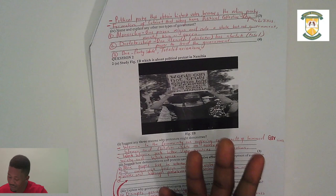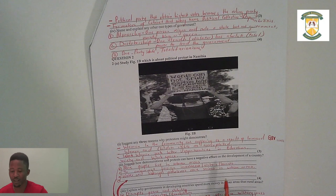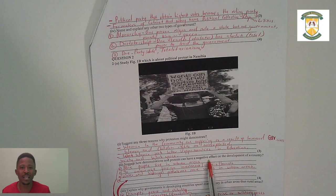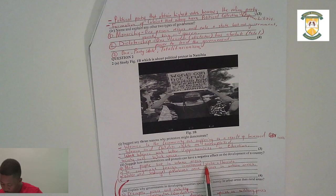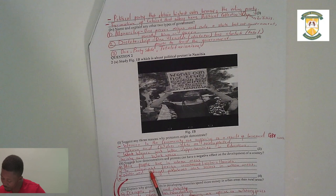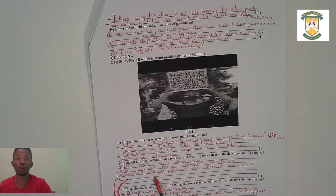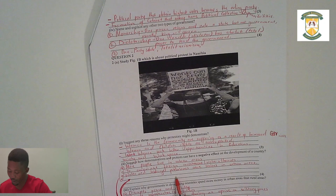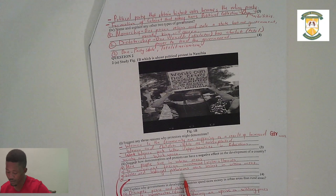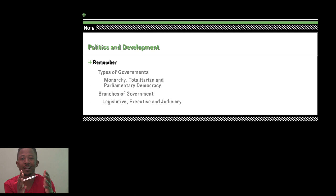Roman one asks you to suggest any three reasons why protesters might demonstrate. In any democratic country, protesters demonstrate because of gender-based violence, because their rights are being deprived, or because they are being abused. Roman two asks how demonstrations and protests have negative effects on development. When you have protests, development is cut — you have looting and chaos, infrastructure is damaged and burned as is the case in South Africa, and this limits the country's chances of developing.